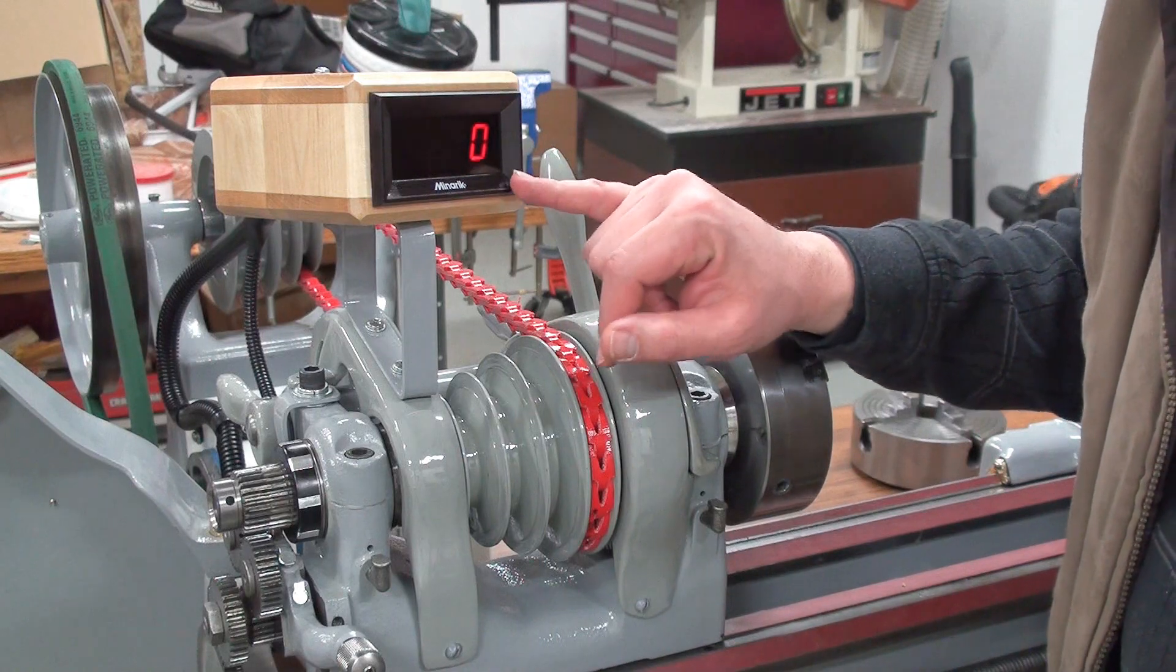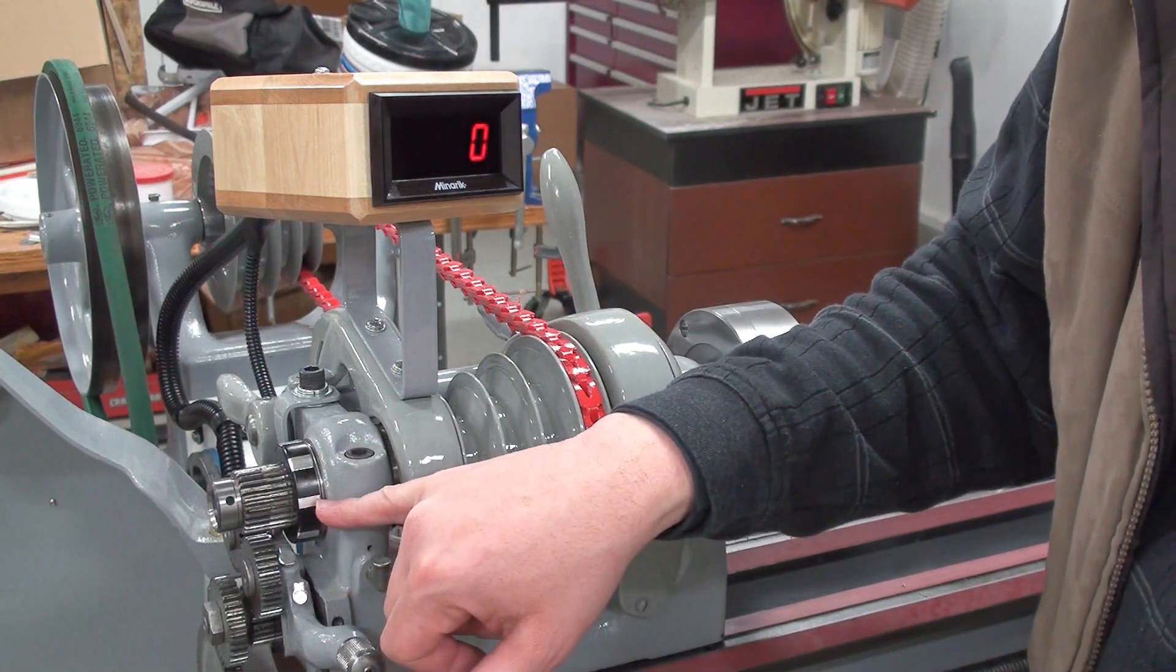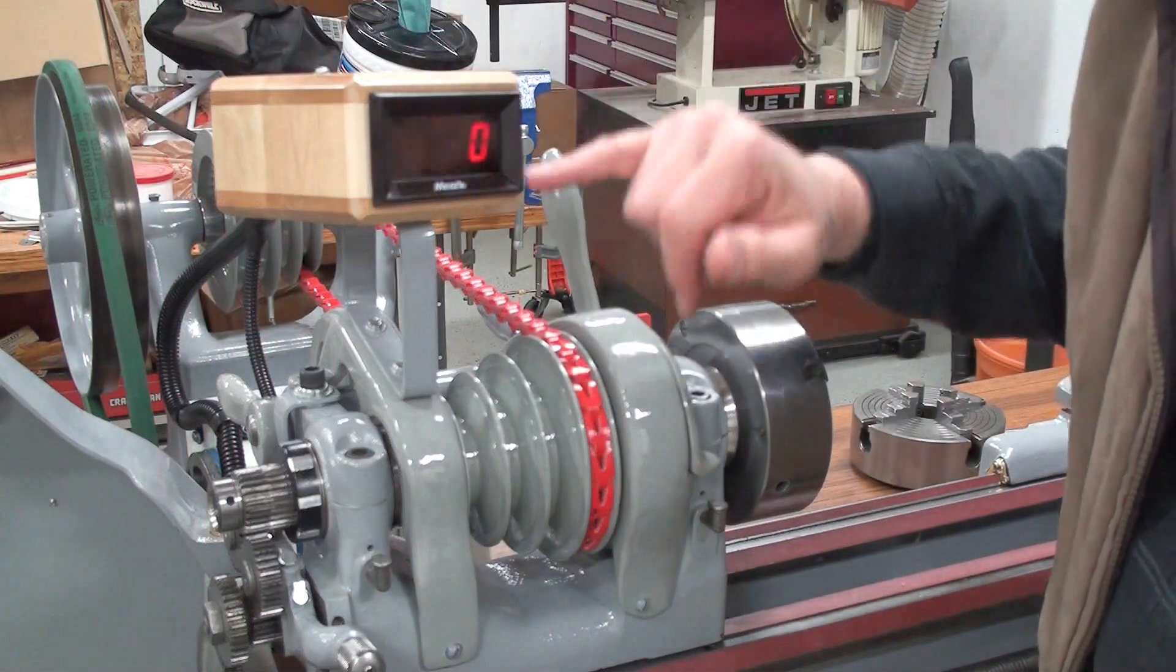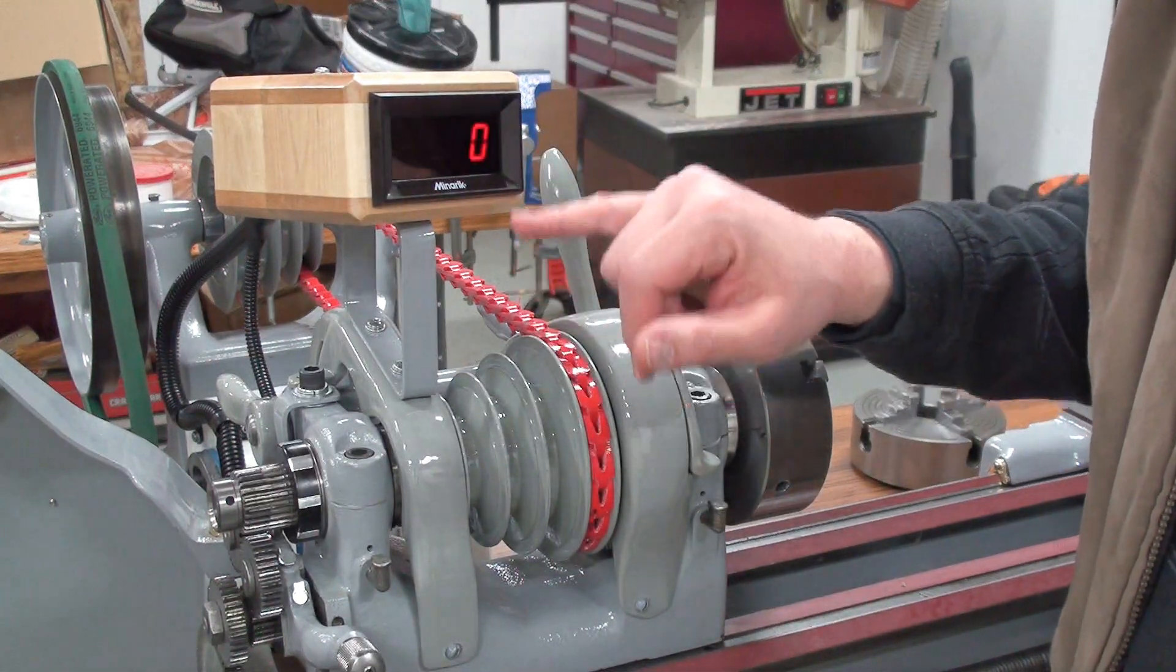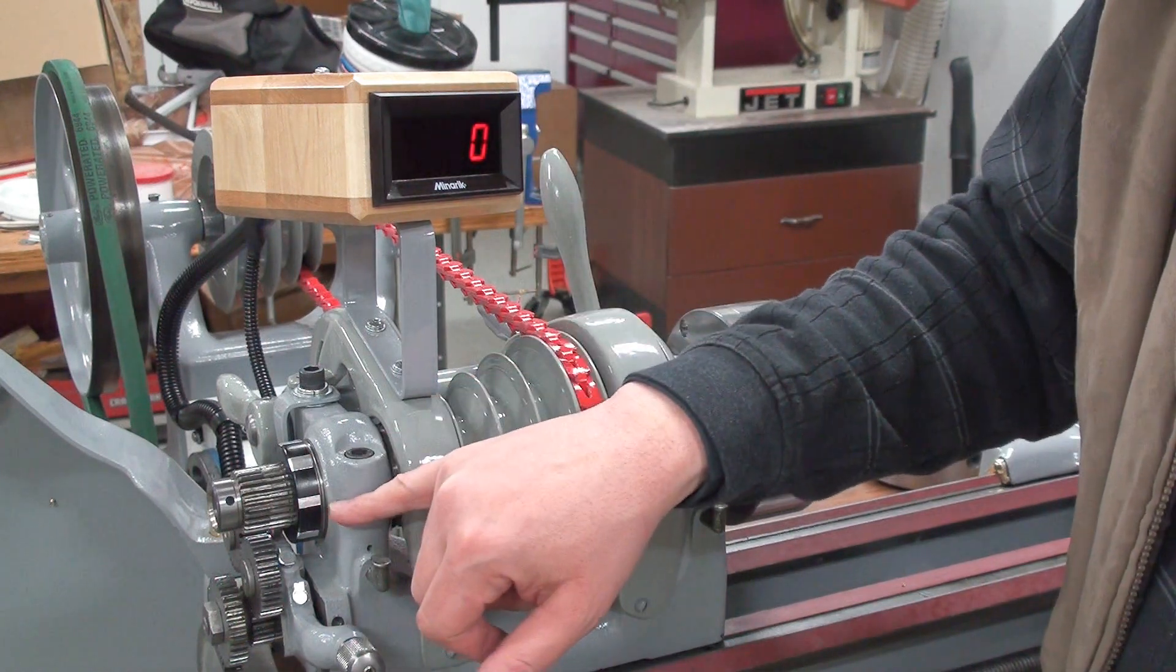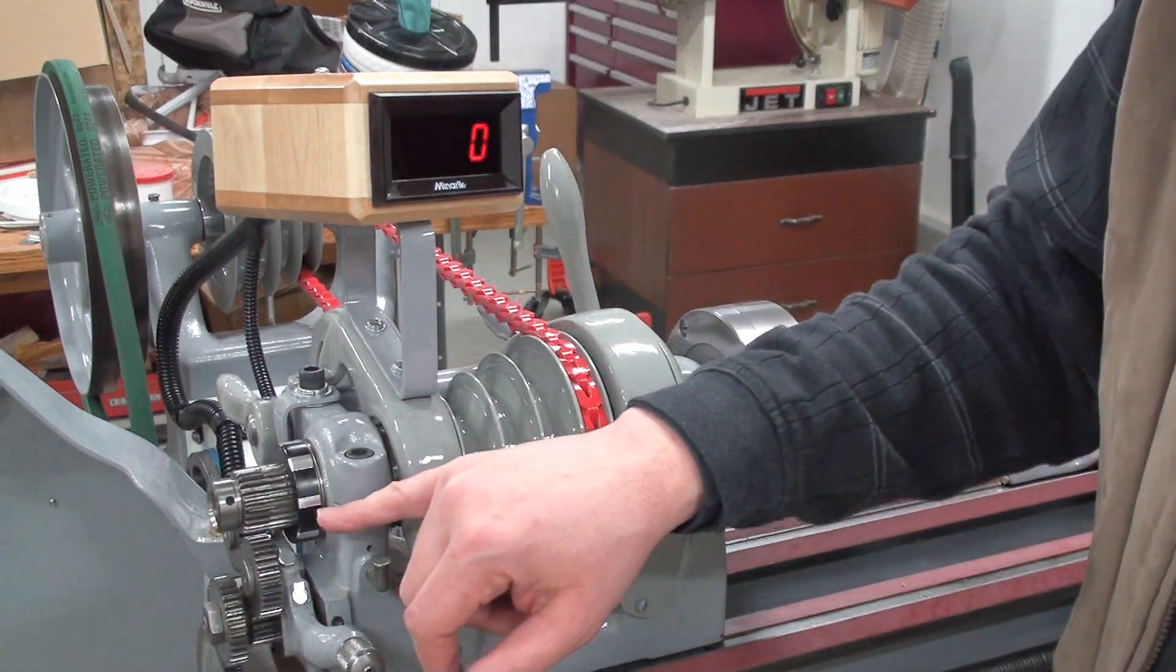Now this particular tachometer required me to have at least eight reflective surfaces for one revolution. And then there's some settings you do in the back of this unit and it will do a calculation in there, give you the RPM based on that. But if I had more, like 32 sensors in here, this will read a lot faster. But with eight, it'll pick up the speed every seven and a half seconds.